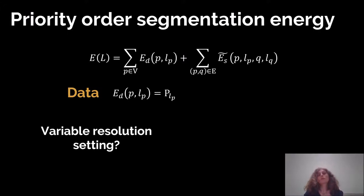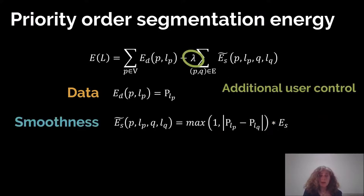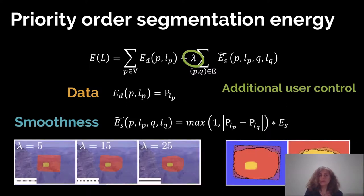So how do we adapt that to a variable resolution setting where you have not priority, but zoom level? We include that in the data term by setting it to the inverse of the level of the quadtree refinement, so that the highest priority is given to images with the highest zoom level, since that's where you have the most resolution. We also allow an additional user control to trade priority pixels for smoothness of the transition between images.